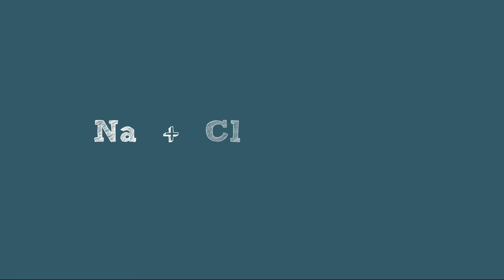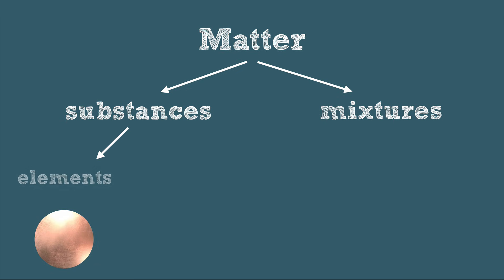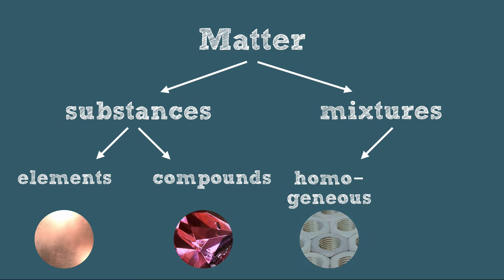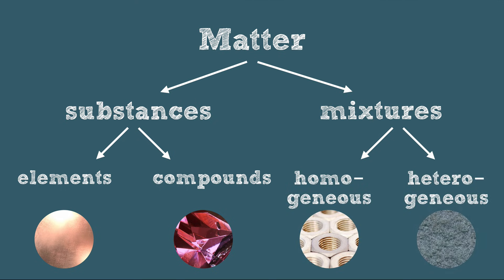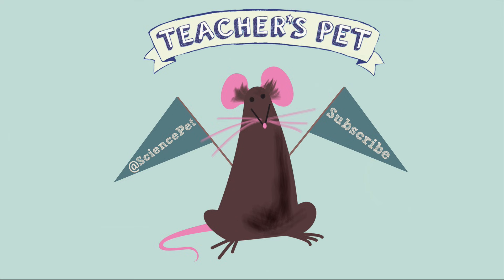This helps us to see that the properties of compounds are different from their component elements. For example, sodium is a highly explosive chemical in water, and chlorine gas is toxic and can kill you, but they combine to make sodium chloride — which is table salt. Not only is it safe, it's delicious. So let's put this all together in a matter flowchart: matter can be divided into substances and mixtures; substances can be divided into elements and compounds; mixtures can be divided into homogeneous and heterogeneous types; and mixtures can be physically separated into substances, while compounds can be chemically separated into elements. Thank you for watching this episode of Teacher's Pet — don't forget to like and subscribe.